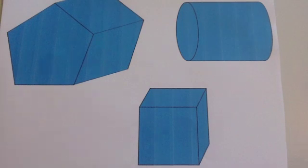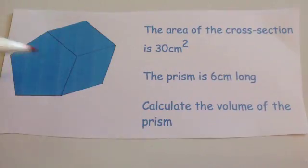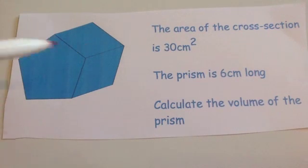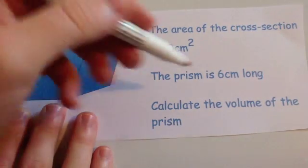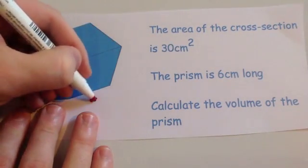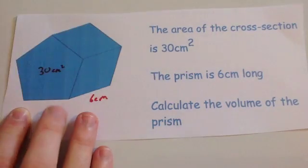Let's have a look at a typical question now. Here's a pentagonal prism. You've got your pentagon at the front, and this is the same throughout. The area of the cross section is 30 cm². The prism is 6 cm long, and the question says calculate the volume of the prism.